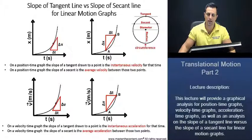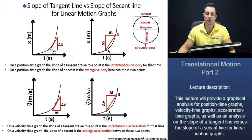We'll be taking a look at the slope of a tangent line versus slope of a secant line for linear motion graphs.